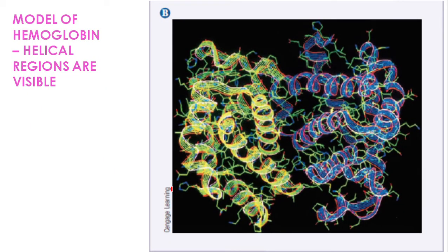Here is the model of hemoglobin. The helical regions in this figure are very clear. This is actually a fluorescent diagram obtained from a microscope and modified using computers, with artificial coloring applied computationally.